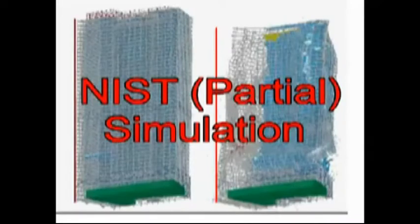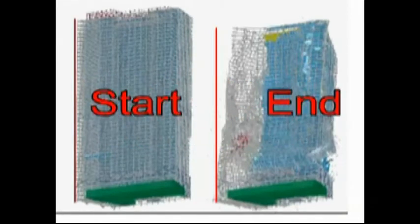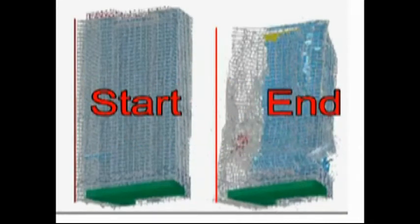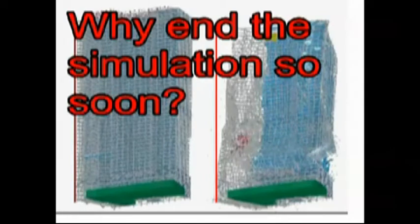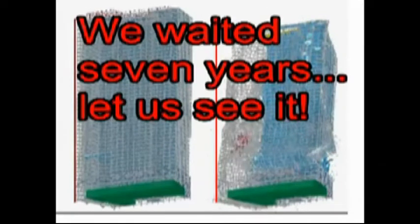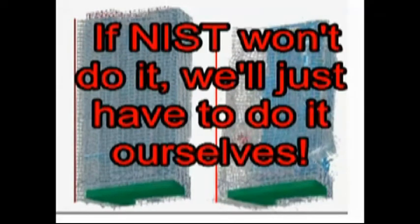The NIST simulation shows Building 7 leaning toward the west. In reality, the building remained straight as it fell until it tipped towards the south at the last second. Surprisingly, the simulation ends about two seconds after the northwest corner of the main roof starts to drop.